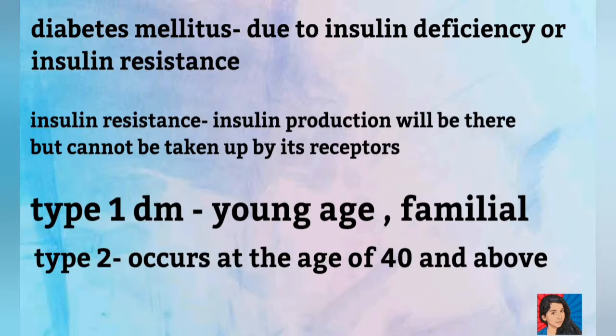If there is no insulin produced in the beta cells of the pancreas, that is insulin deficiency. Or when insulin reaches cell membrane receptors but cannot act properly, that is insulin resistance. When insulin production exists but the mechanism of action is disrupted, that condition is called diabetes mellitus.